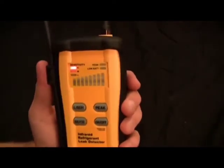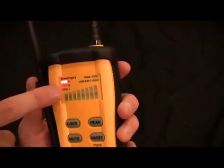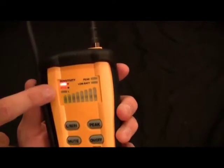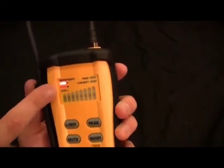And the bar graph, this shows you how big of a leak you have. The bigger the leak, the higher you'll go on the bar graph. Then we have the peak button.